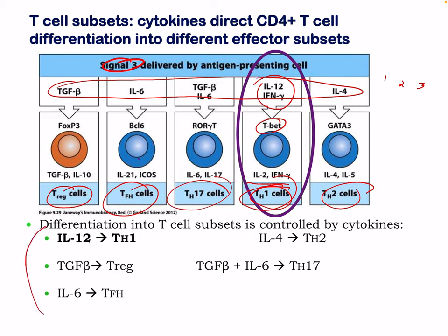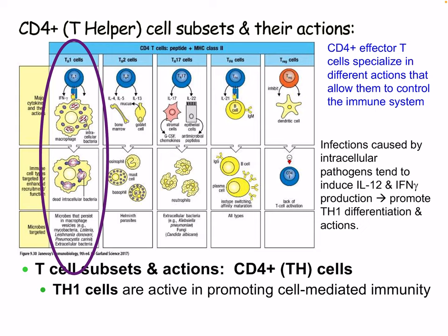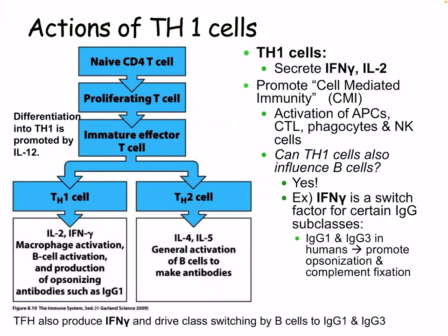The different T cell subsets are controlled by different cytokines — IL-12 being the main one. CD4-positive effector T cells specialize in different actions that allow them to control the immune system. Infections caused by intracellular pathogens tend to induce interferon gamma and IL-12, and this promotes Th1 differentiation and action. Th1 cells are active in promoting cell-mediated immunity, and they release interferon gamma and IL-2.